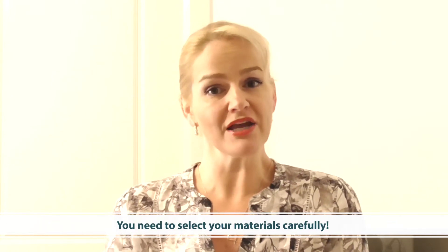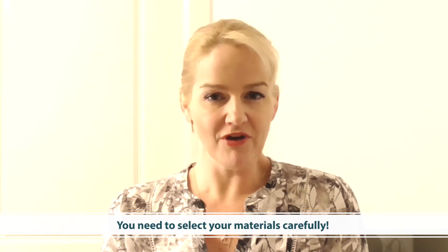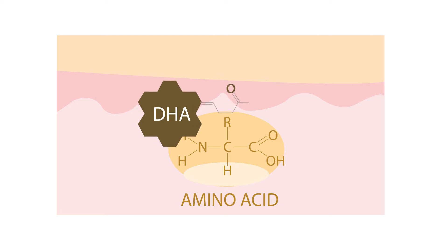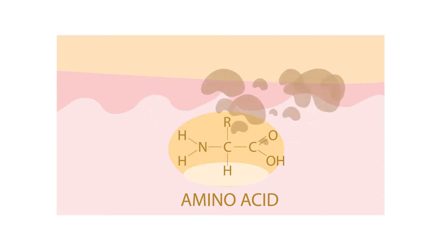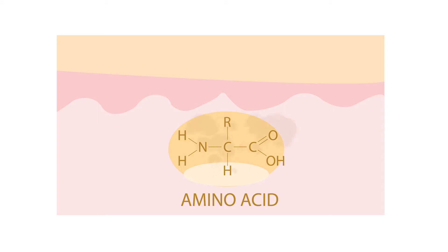Tanning lotions are created largely using dihydroxyacetone or DHA, which is a seemingly harmless white powder. The problem is this particular substance is very incompatible with a lot of the materials we commonly use, which makes ingredient selection very difficult. DHA is so effective at producing a tanned effect because it reacts with amines, peptides, and amino acids of the stratum corneum to produce brown polymers called melanidins — similar to the Maillard reaction.